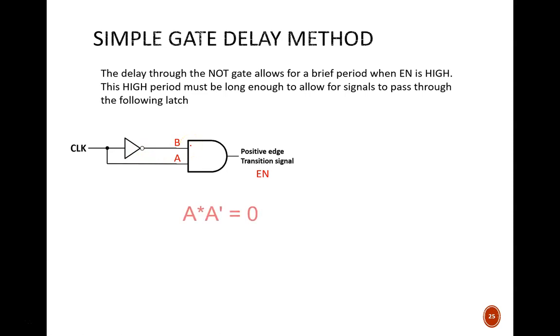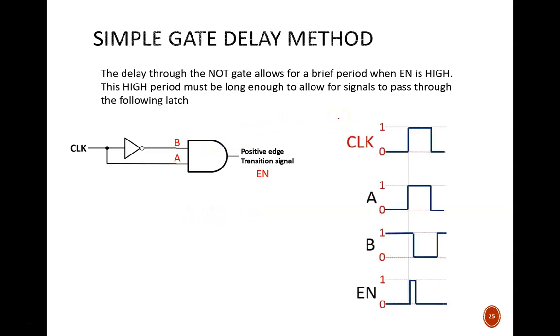One of the basic Boolean algebra rules tells us that a literal ANDed with its complement always equals zero. So this AND gate should always be outputting zero, right? Almost, but don't forget about gate delay.